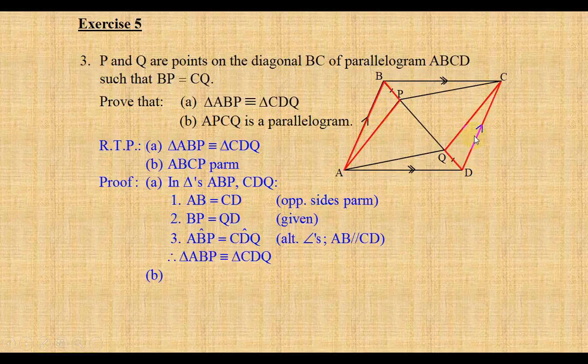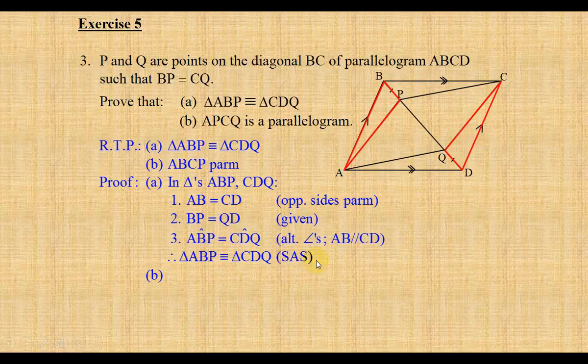Therefore, both these triangles, as you can see in the diagram, the red triangles, are congruent. And the case we are using is side, included angle, side.